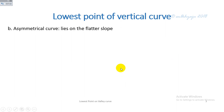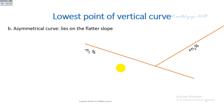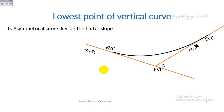In the case of an asymmetrical curve — that is, if the slopes of the valley curve are not equal — then the vertical curve is asymmetrical. In that case, the lowest point lies along the flatter slope.